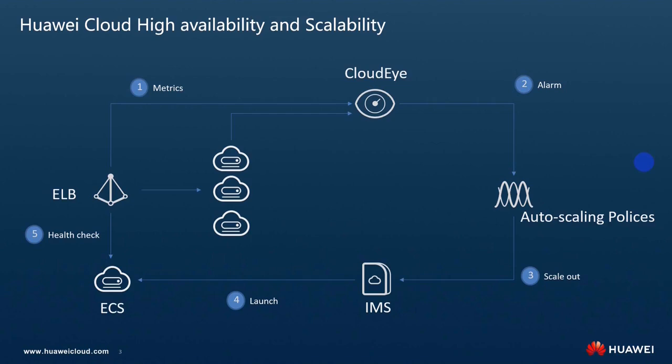Here is the solution design. We will set up an Elastic Load Balancer in front of Elastic Cloud Servers (ECS) which will deploy stateless web servers. Both ELB and ECS will periodically send out metrics to Huawei Cloud monitoring service, called Cloud Eye, by a predefined alarm threshold within auto scaling functionality. Cloud Eye will trigger the alarm to AS by policy definition and AS will deliver scale out or scale in of ECS instances using the ECS template, which we call Image Management Service (IMS). ELB will also monitor ECS status.